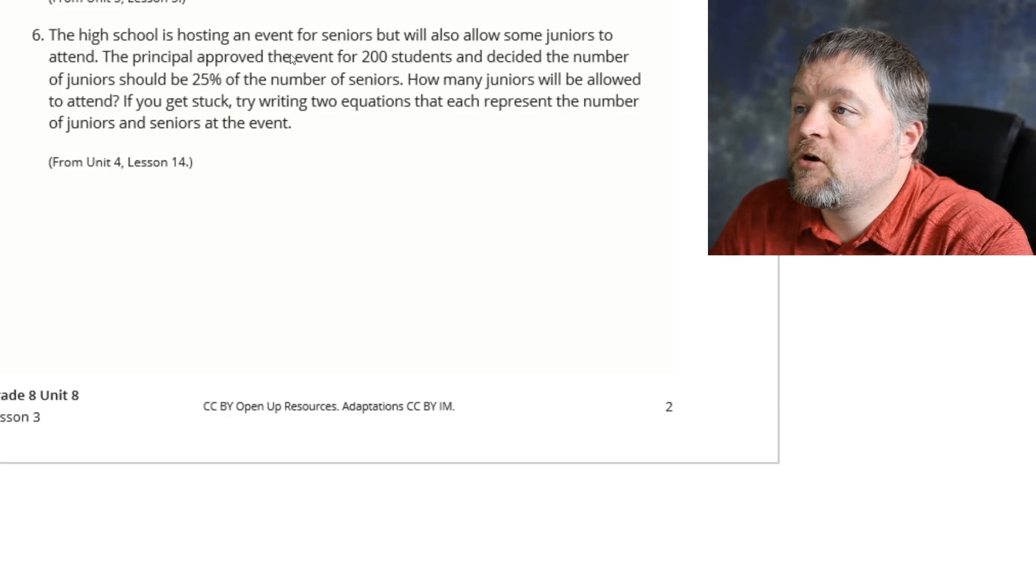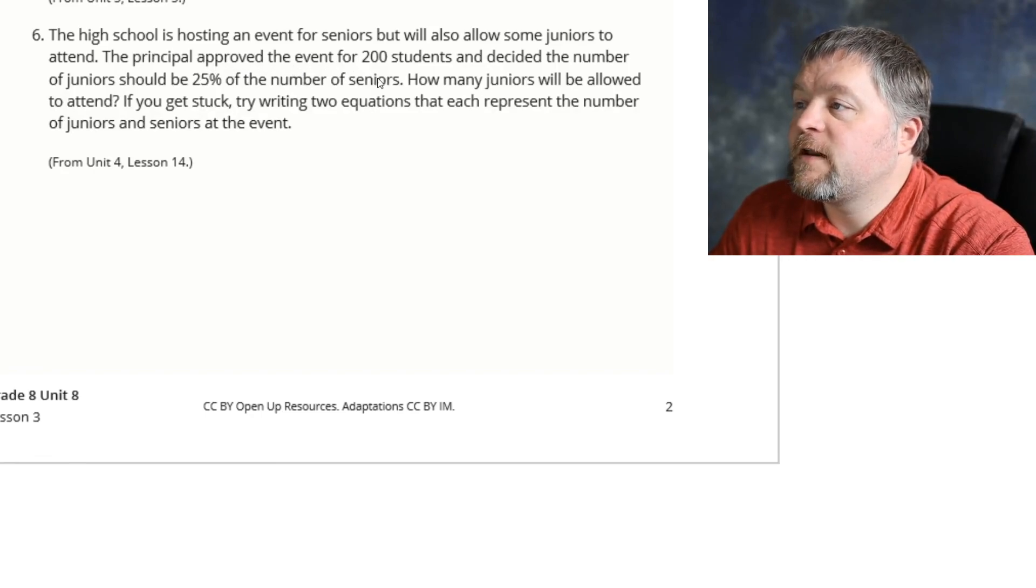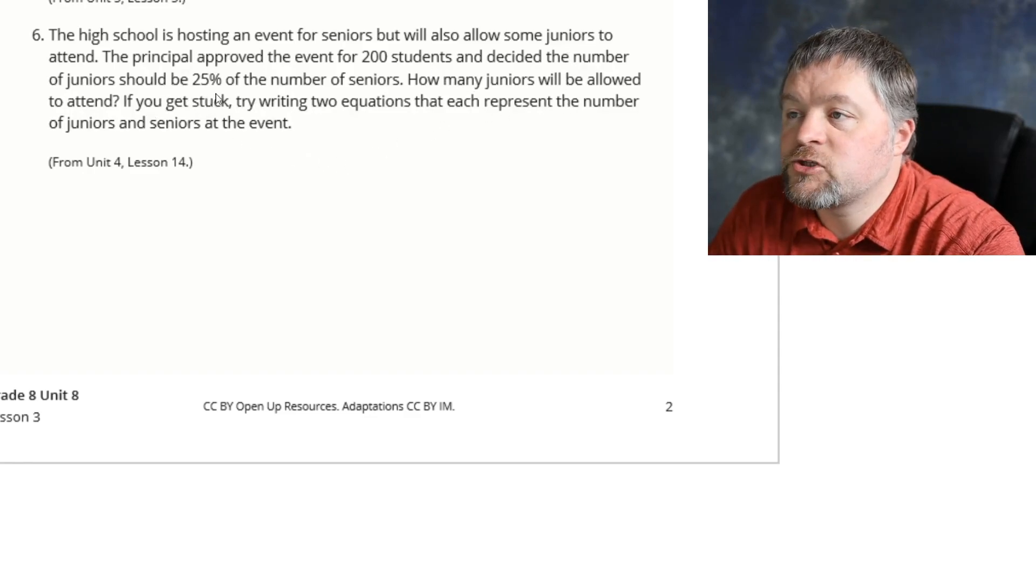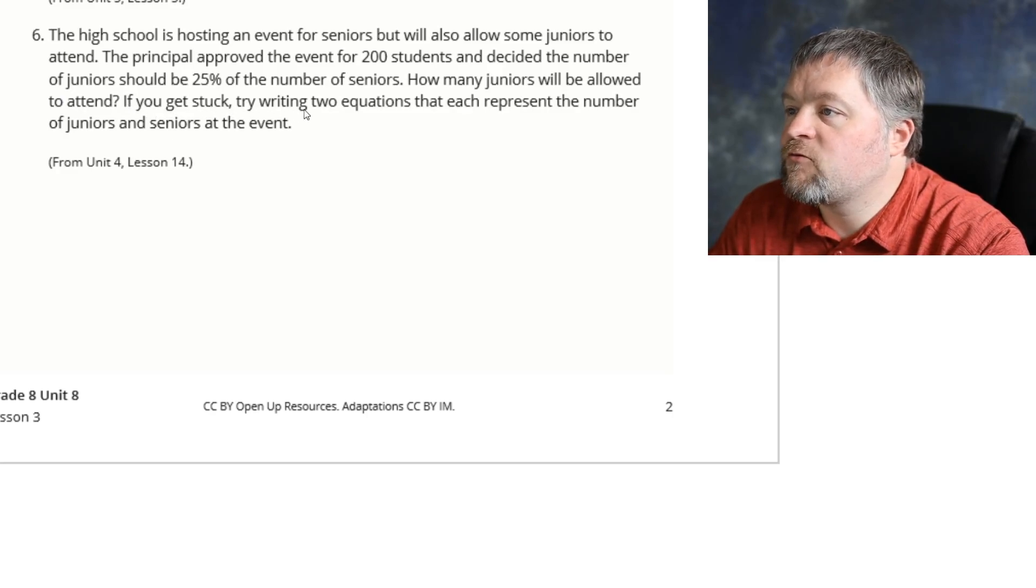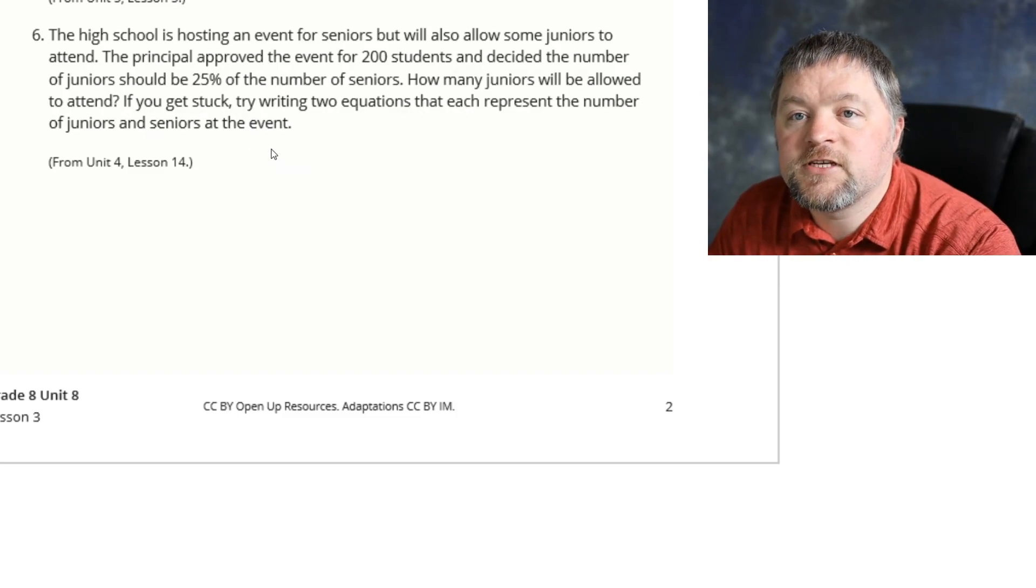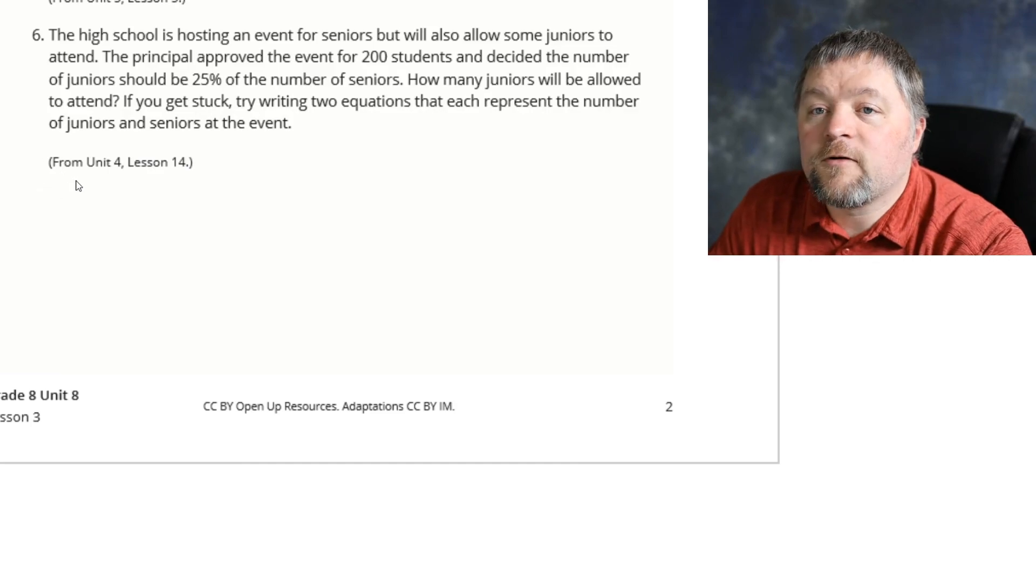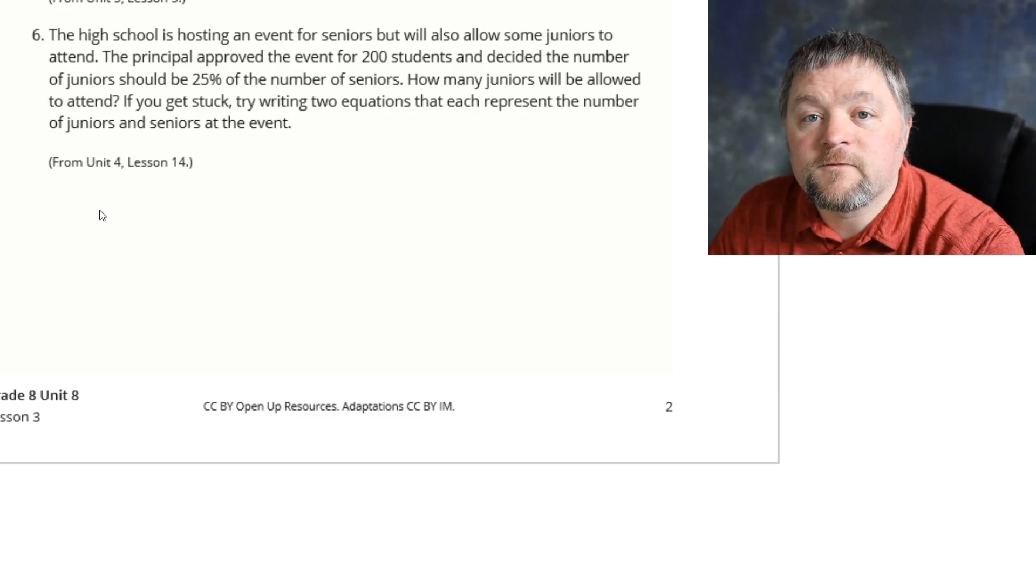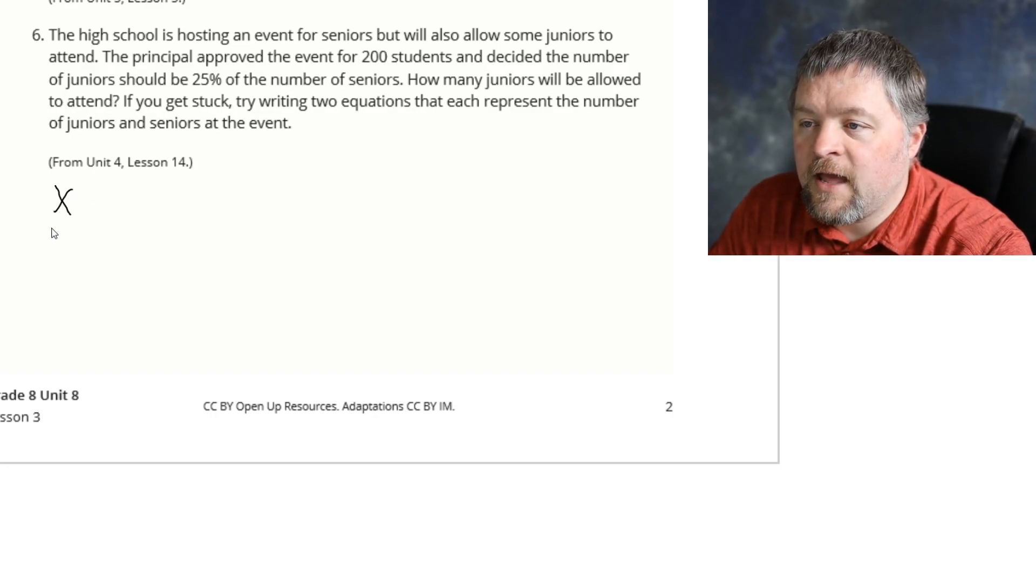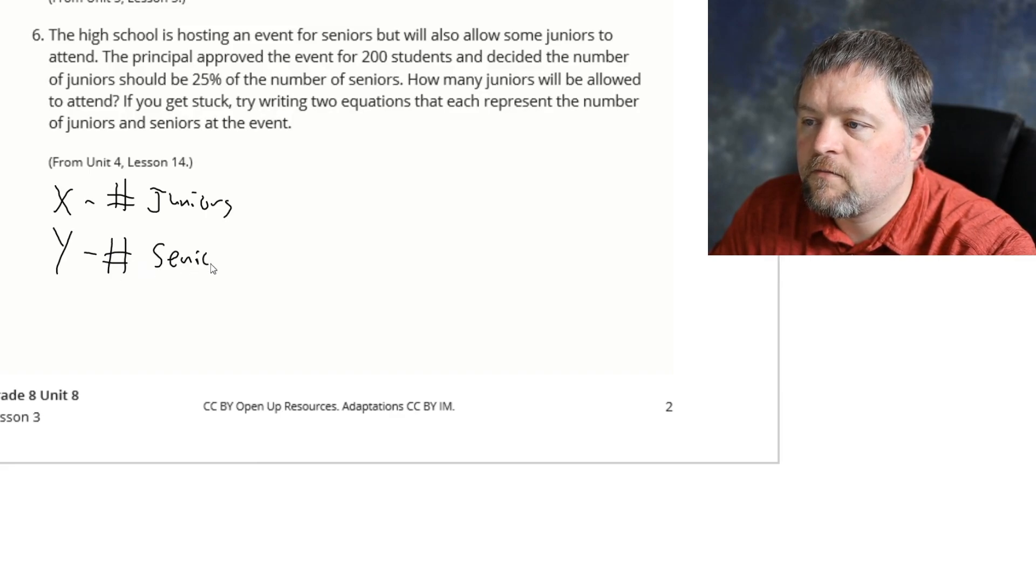Our last problem is the high school is hosting an event for seniors, but will also allow some juniors to attend. The principal approved the event for 200 students and decided the number of juniors should be 25% of the number of seniors. How many juniors will be allowed to attend? If you get stuck, try writing two equations that represent the number of juniors and number of seniors at the event. So this is a review of systems of equations, two equations that go together. Our first thing we need to figure out is what are our unknowns? What values are we trying to figure out? Well, we need to figure out the number of juniors and the number of seniors. I'm going to call them x and y and I'm going to label them number of juniors, number of seniors.